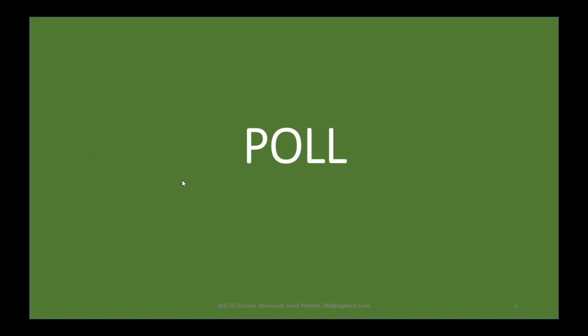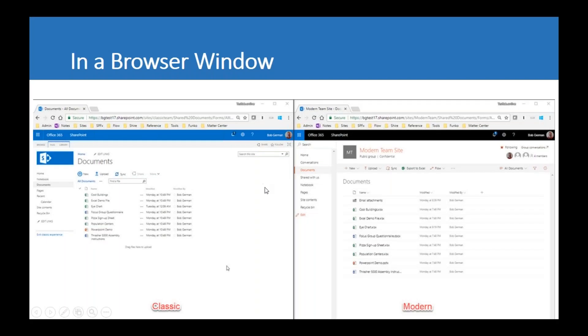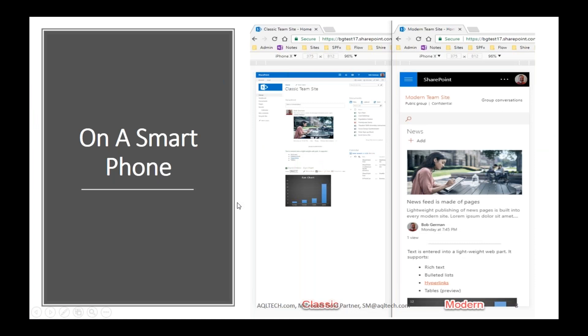That tells a lot about the value this webinar can provide. We're going to cover a lot about the modern UI. The next big thing is responsiveness on smartphones. In the past, AQL had implemented responsiveness on SharePoint classic pages using frameworks like Bootstrap to make them mobile friendly, and that used to take a lot of effort. But now that's not the case anymore — everything is out of the box mobile friendly and responsive.